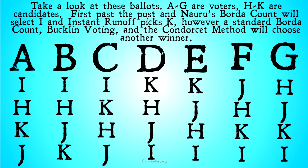Take a look at these ballots. A through G are voters, and H through K are candidates. First past the post and Nauru's Borda count will select I. Instant runoff will pick K. However, a standard Borda count, Bucklin voting, and the Condorcet method will all choose a different winner.